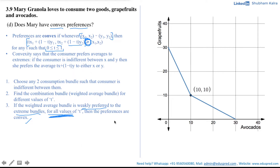Step one says: choose any two consumption bundles such that the consumer is indifferent between them — meaning both bundles must lie on the indifference curve. I'll choose (0, 30), where she consumes zero avocados and 30 grapefruits, and (30, 0), where she consumes 30 avocados and zero grapefruits. Since both lie on the indifference curve, Mary is indifferent between them. Step one is complete.